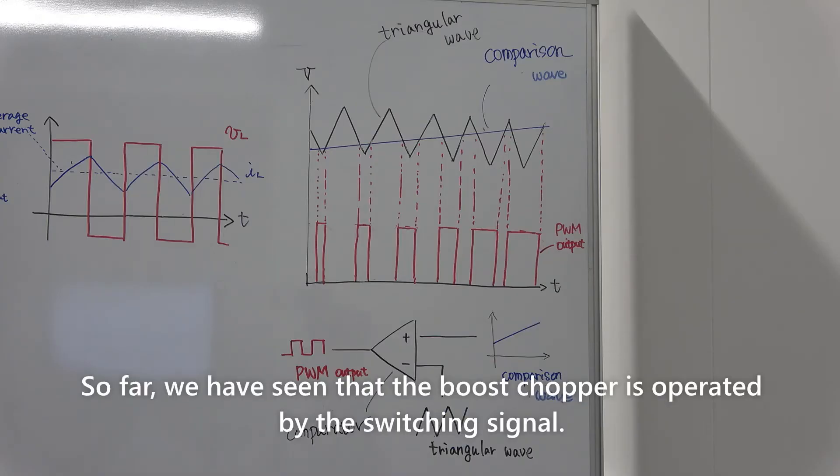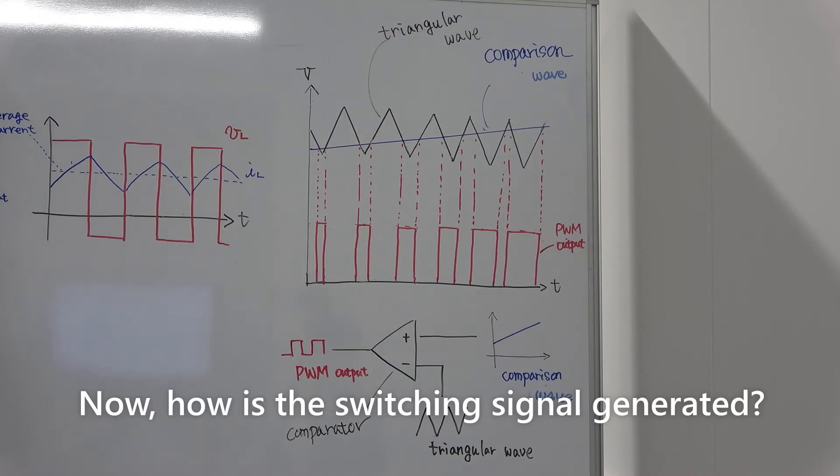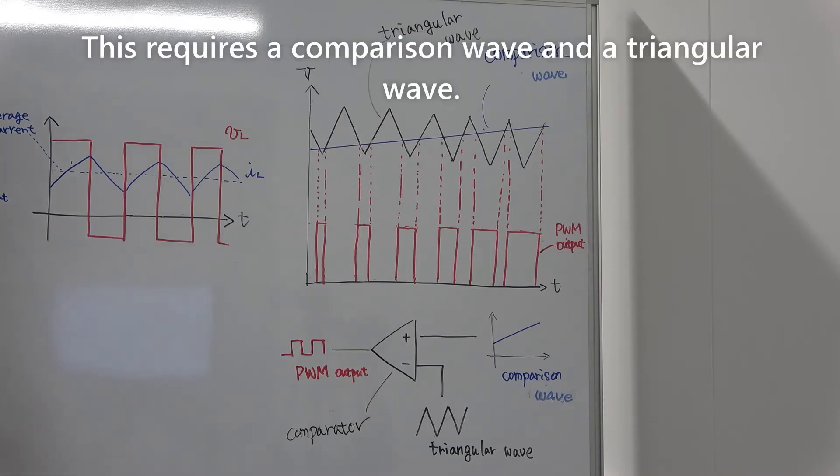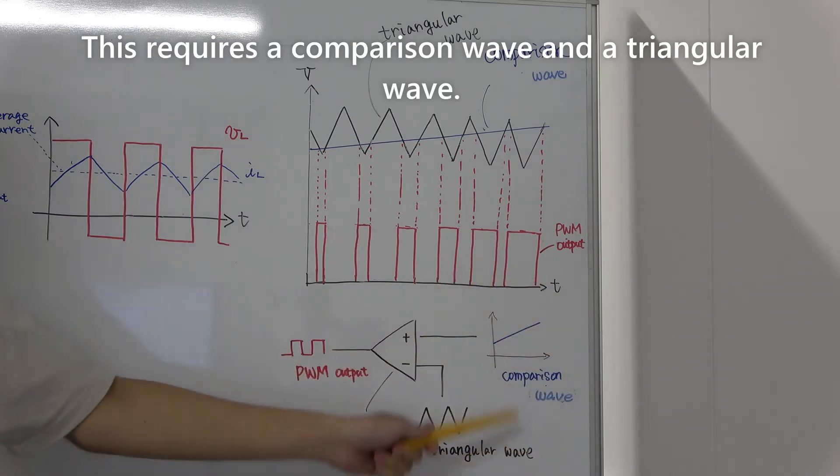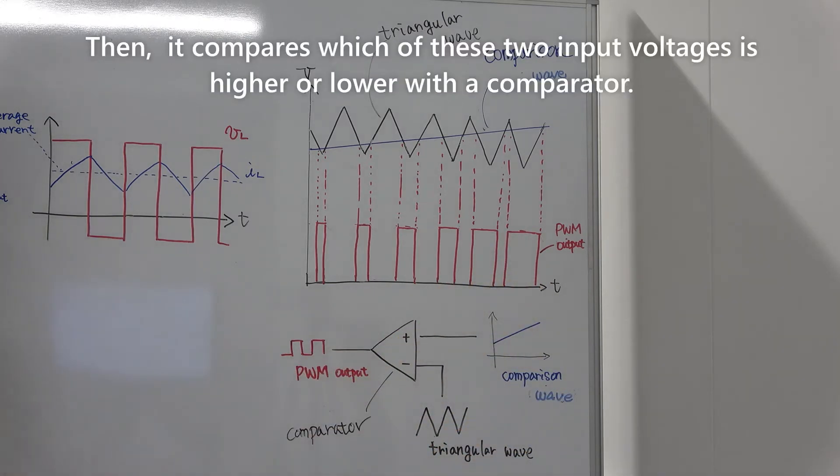So far, we have seen that the boost chopper is operated by the switching signal. Now, how is switching signal generated? This requires a comparison wave and a triangular wave. Then, it compares which of these two input voltages is higher or lower with the comparator.